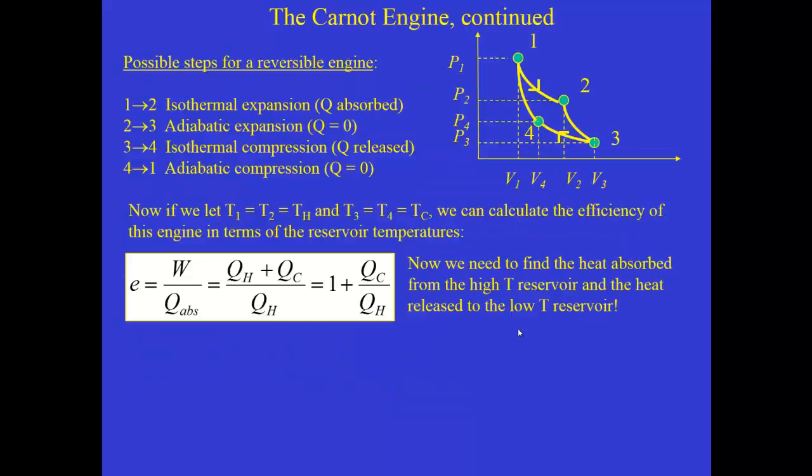An isothermal process such as you have along an isotherm from point one to point two on this PV diagram is one in which heat flows in and it's used to do work. And all of the heat goes into doing work. I know that because the first law of thermodynamics says that the change in the internal energy is Q minus W. And if you're on an isotherm along the line from one to two, that means the internal energy doesn't change. So heat is absorbed and completely converted into work.